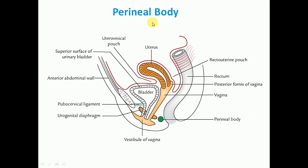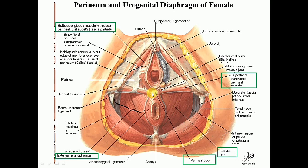The next important support is the perineal body, which is the central point of the perineum. It is a fibromuscular node situated in the median plane about 1.25 cm in front of the anal margin. It acts as an anchor for the pelvic diaphragm and maintains the integrity of the pelvic floor. About 10 muscles of the perineum converge and interlace in the perineal body, of which 4 are paired, giving 8, and 2 are unpaired.